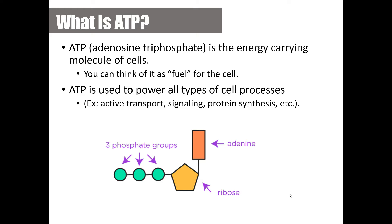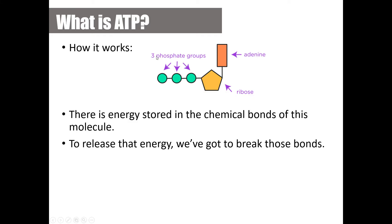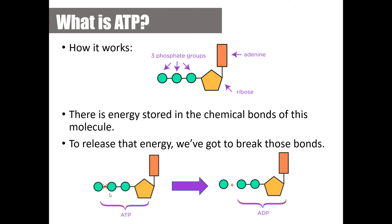Looking at the structure of an ATP molecule, it is made up of three parts: adenine, a sugar ring called ribose, and three phosphate groups — hence adenosine triphosphate. The lines between the phosphate groups represent stored chemical bonds with a lot of energy. When one phosphate is broken off, we no longer have adenosine triphosphate — we get adenosine diphosphate, or ADP.